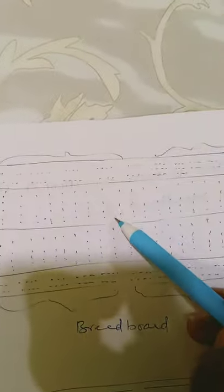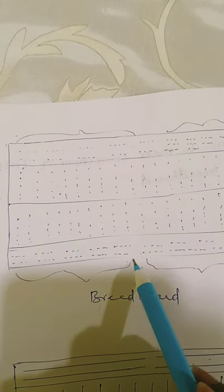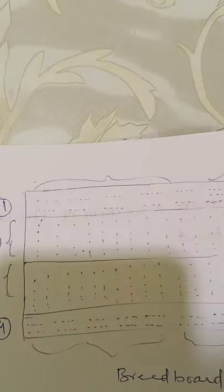If you want to construct this circuit on a breadboard, first choose 5 different potential lines. As you can see, this is one different potential line, this is another, and so on — you can find up to 5 different potential lines. First step: choose the different potential lines.